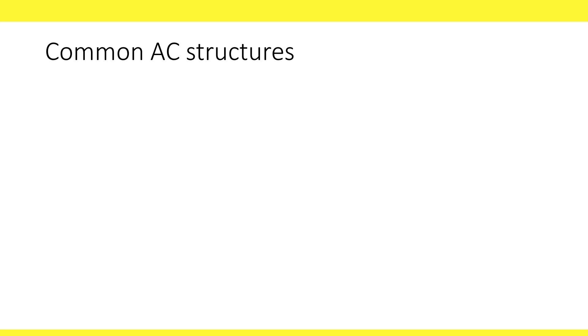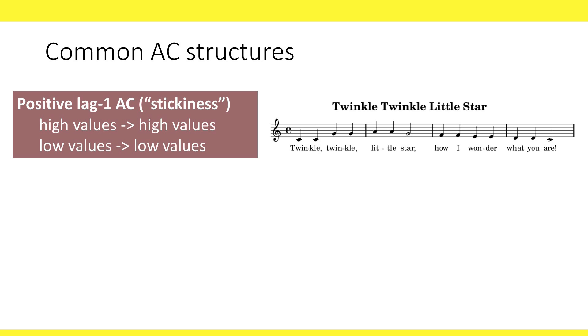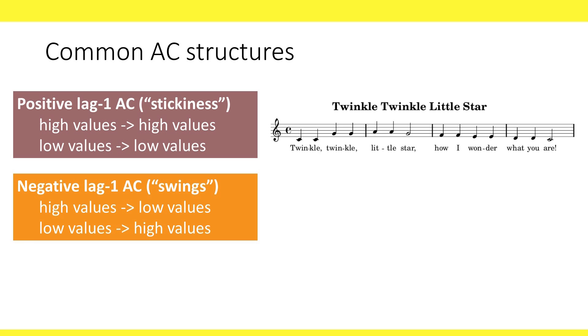Let's look at three common structures and what they reflect. A large positive spike at lag 1 is called stickiness. It means that high values follow high values and low values follow low values. We can think of a music tune that moves gradually.